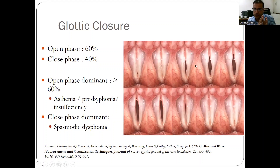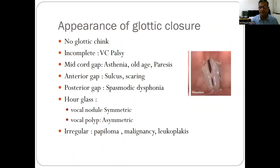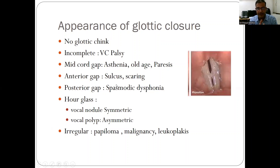If the open phase is excessive, it is generally seen in asthenia, old age, or vocal insufficiency. When muscle contractions are greater — as in spasmodic dysphonia — the closed phase is more prominent. In malignancy or vocal cord palsy, the glottic chink may be incomplete. A mid-cord gap is seen especially in old age; anterior gaping is seen in sulcus vocalis; posterior gaping in spasmodic dysphonia. Vocal nodules produce an hourglass shape of closure, and malignancy or papilloma produces irregular closure.